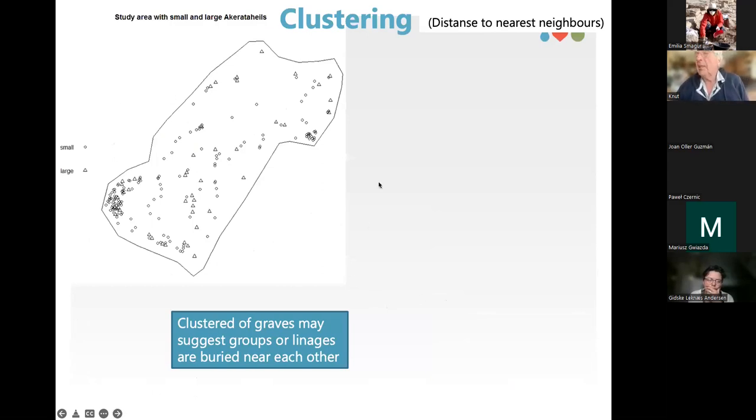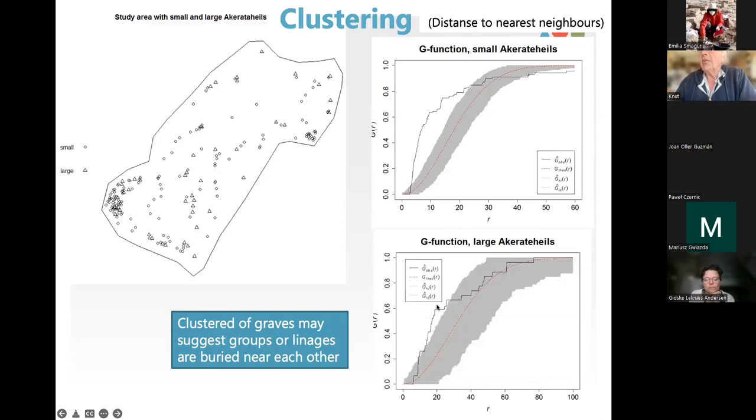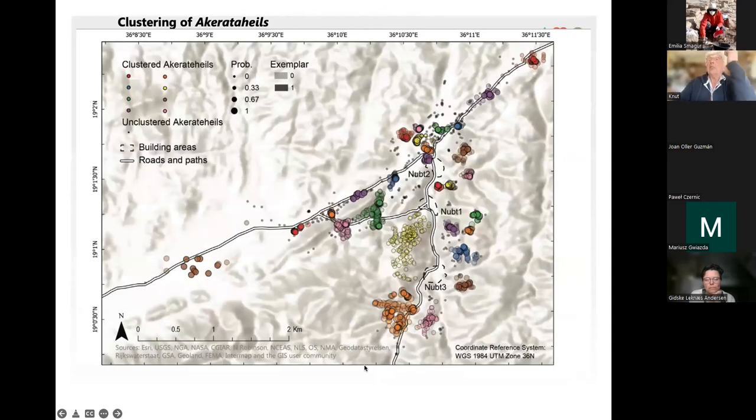It also was an impression that the graves were clustering, that there were clusters of graves. And we wanted to investigate this as an idea that maybe clusters of graves could represent groups of lineages of people buried near to each other. For the identification of clusters, we used the distance to the nearest neighbor. And we see here that the distance of the small Ekratels is clearly diverged from the random distribution. With the larger one, it is less clear, but also here, it diverged from random. So, there are clusters, as we could imagine from what we saw.